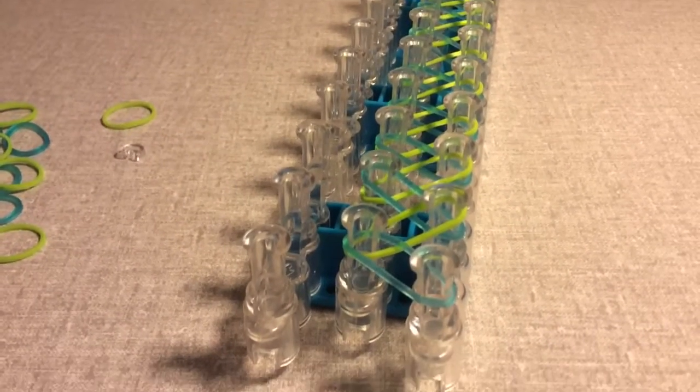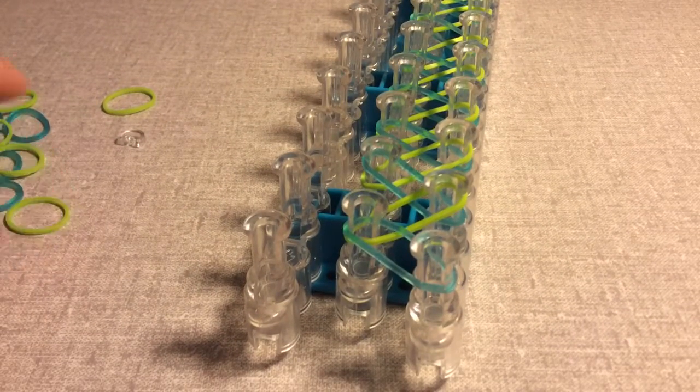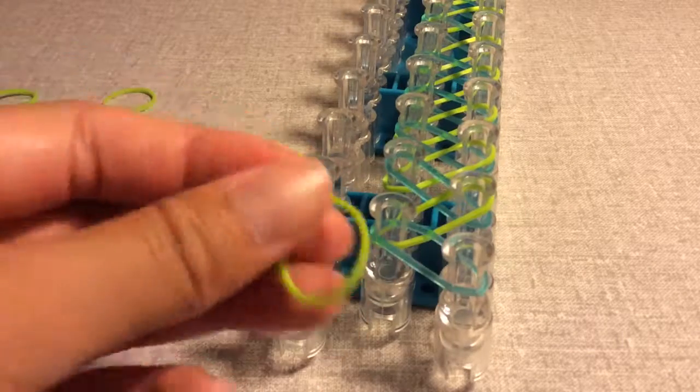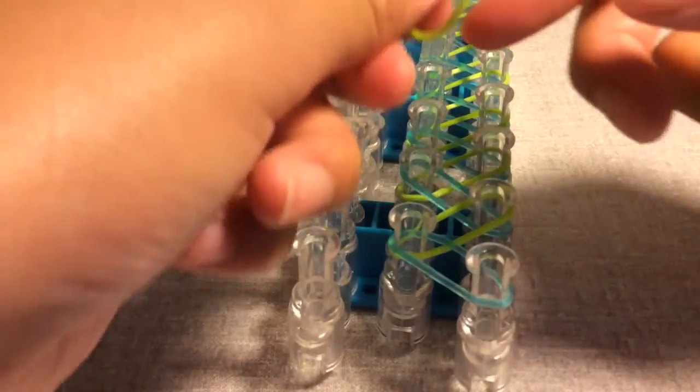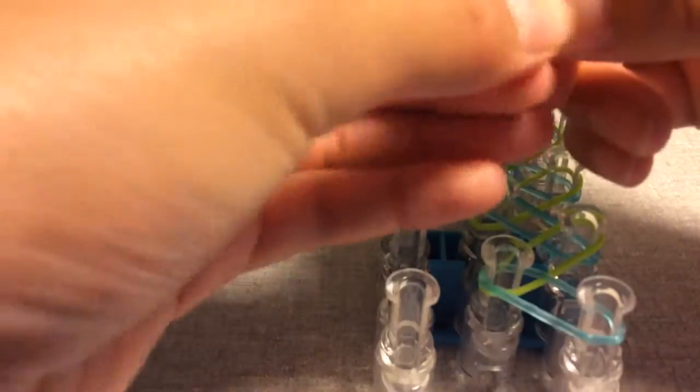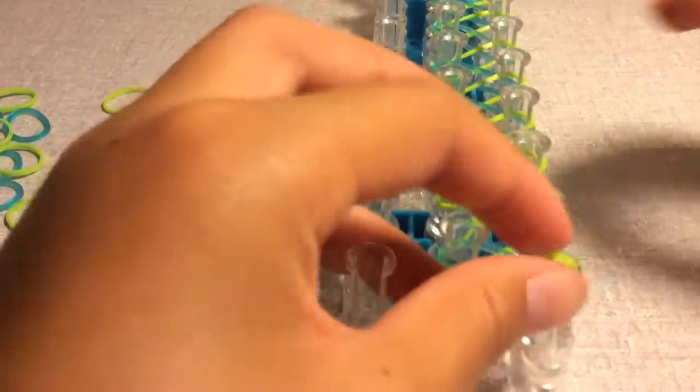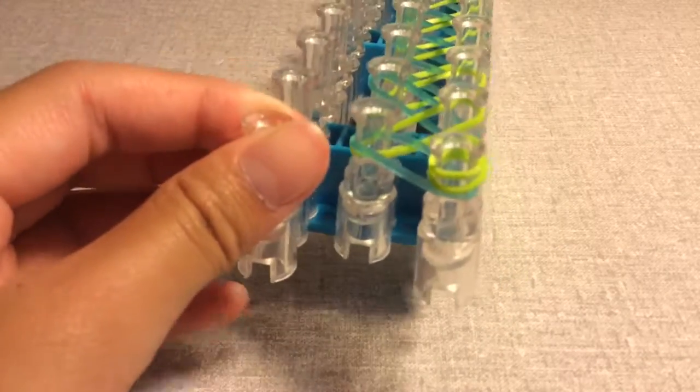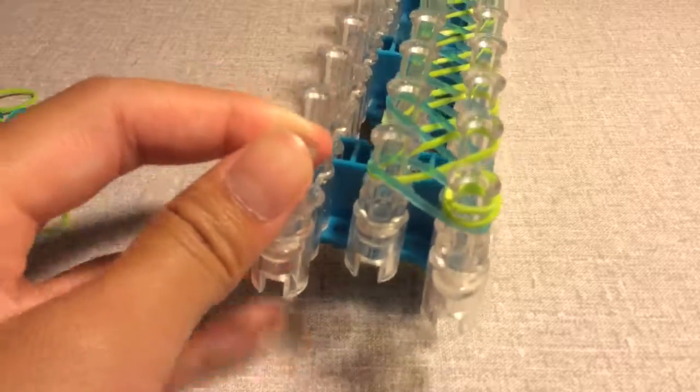So you want to make a cap band. So once I started, I ended with blue, I'm going to start with green. So you want to double loop it on your finger and you want to convert it on this pin right here. So you have to put it like that right there. And the cap band is there. So now let's start putting the bracelet together.